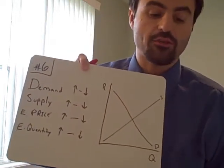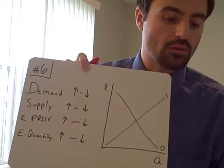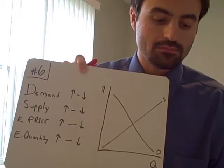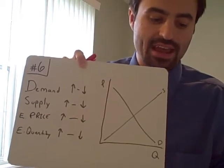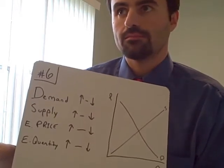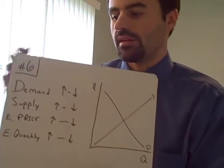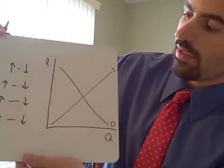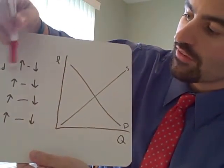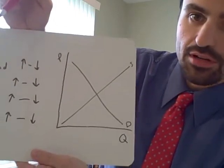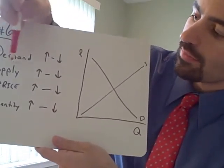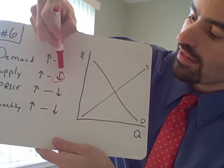The first good we look at is foreign steel. It says there is a tariff or a tax on foreign steel. If you're getting taxed in your business, are you happy? No, you're not. So is that going to affect supply or demand? Of course you're a supplier, so it's going to affect supply. If you're taxed, are you going to supply more or less? You're going to supply less. So circle that arrow down.